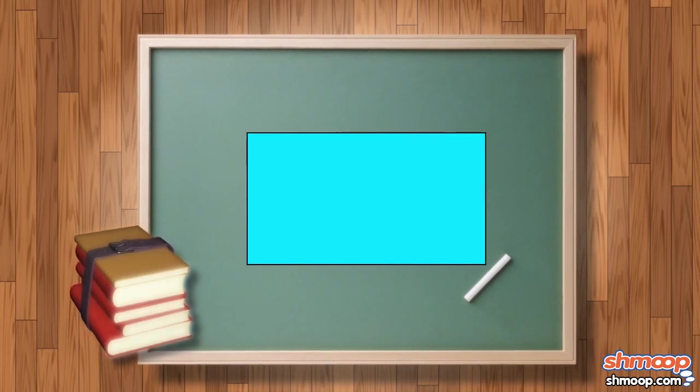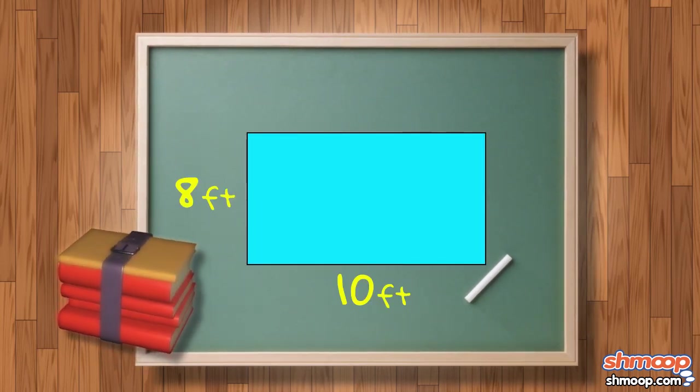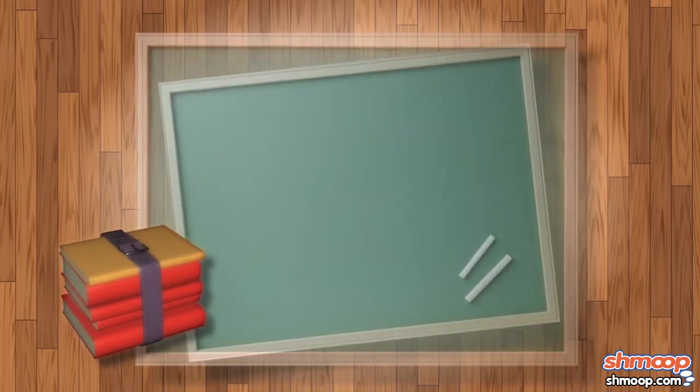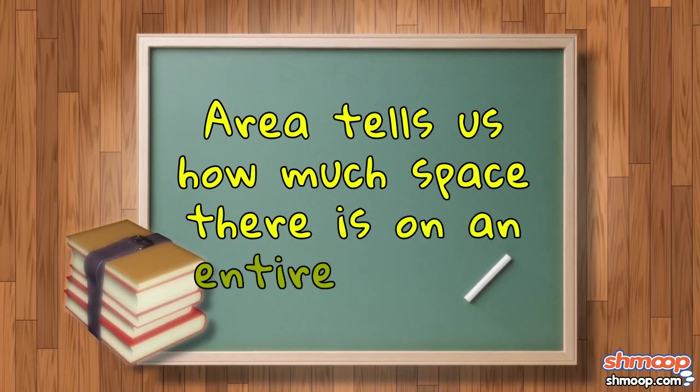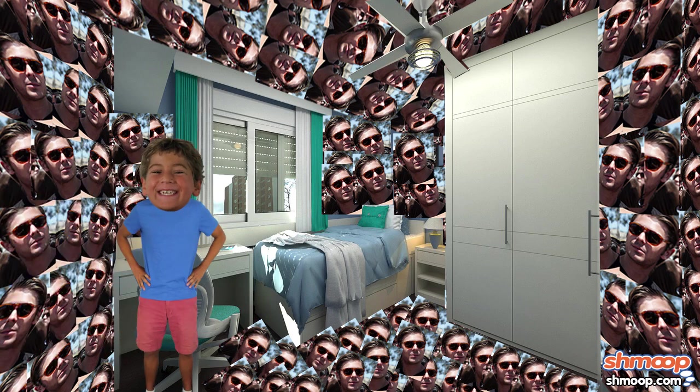You might know that one wall is ten feet long and eight feet tall, but those are just one-dimensional measurements. Area tells us how much space there is on an entire surface. In this case, each wall, ceiling, and floor.